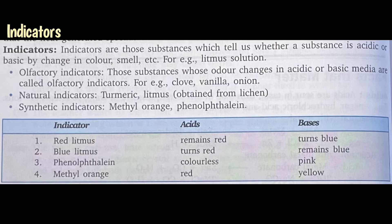Indicators are of three types: olfactory indicators, natural indicators, and synthetic indicators. Olfactory indicators are substances whose odor changes in acidic or basic media — examples are clove, vanilla, onion, etc. Natural indicators include turmeric, litmus obtained from lichen, etc. You might have observed that a stain of curry on white cloth becomes reddish brown when soap, which is basic in nature, is scrubbed on it — this is an example of color change showing yellow turmeric turning reddish brown when base is added. Synthetic indicators include methyl orange and phenolphthalein.